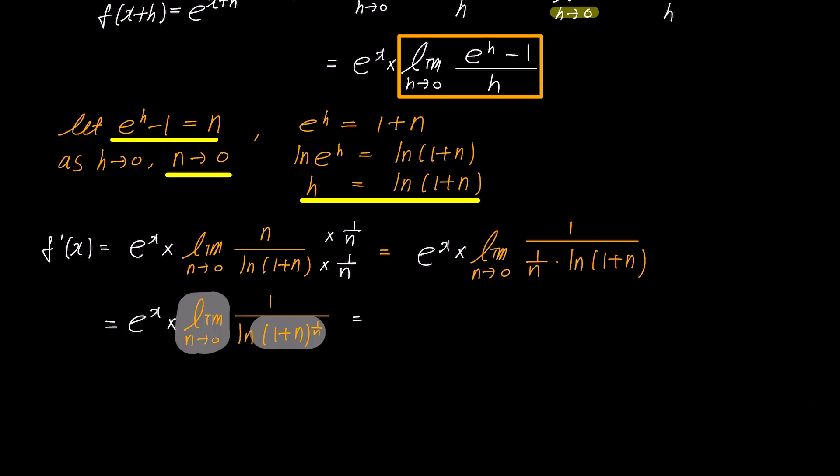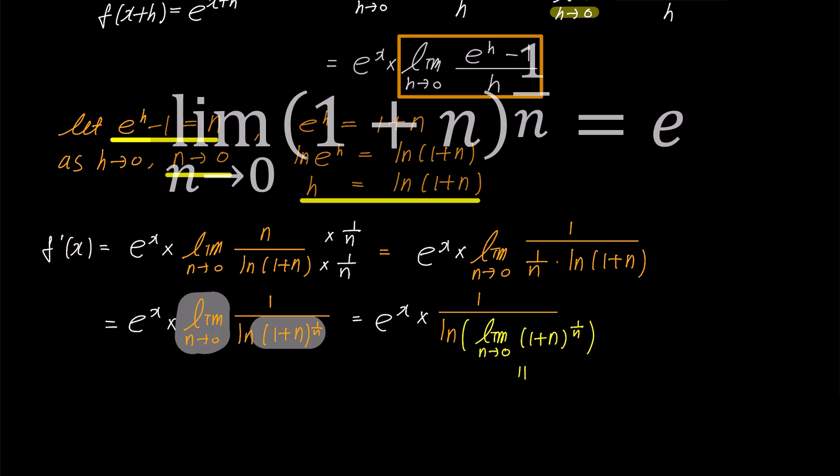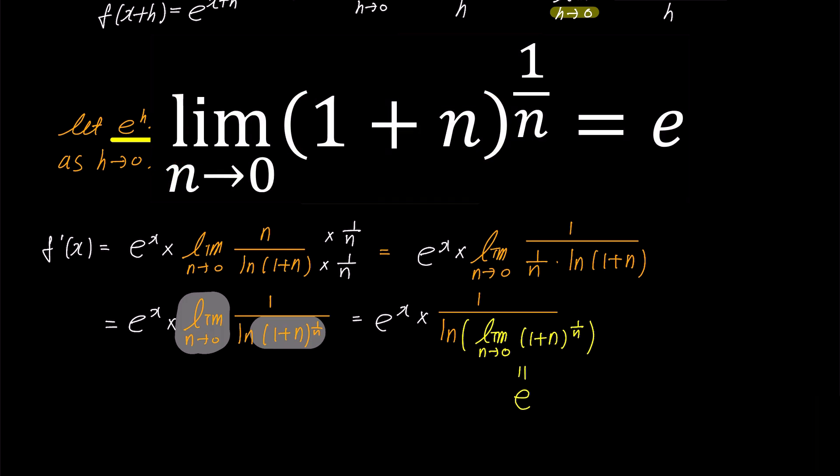Therefore, this expression can be written as e to the power of x times 1 over ln, and we can see that this limit value is Euler's number, denoted as e, as shown earlier.